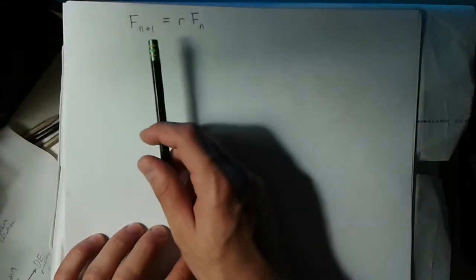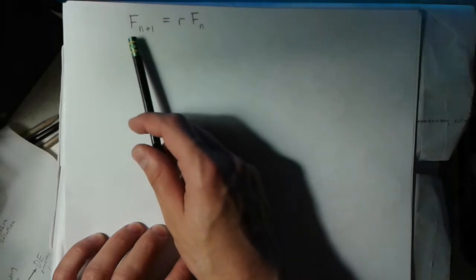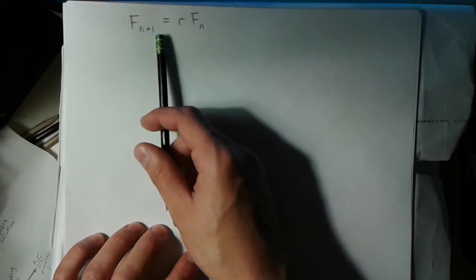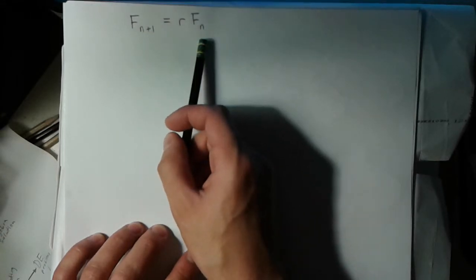Welcome to my second video. Here I have a recurrence relation. We're saying that the n+1th term is proportional to the nth term with proportionality constant r.